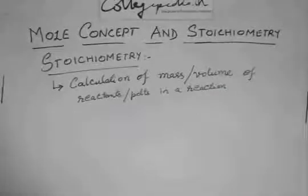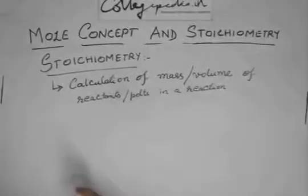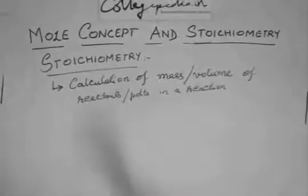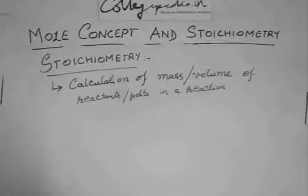It simply calculates that if this much reactant is there, how much product will be formed. If this much product is formed, then how much reactant should have been used in the reaction, and other stuff related to this.